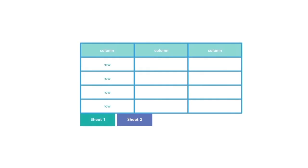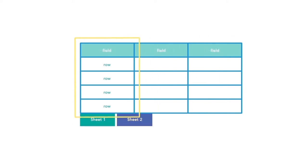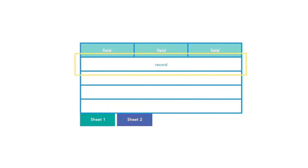Each of these terms lines up well with spreadsheet terms. A spreadsheet can be considered a table. The columns are fields, and the rows are records.